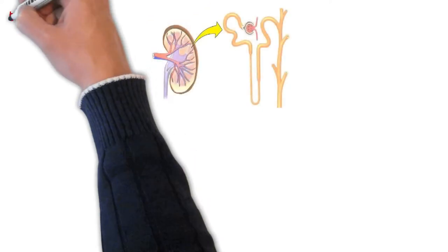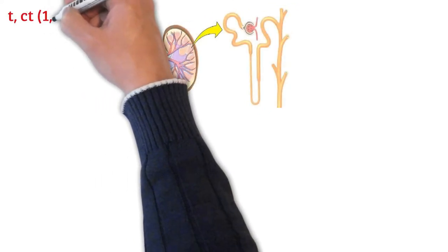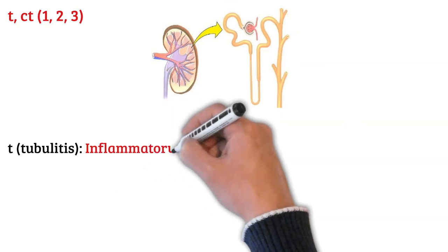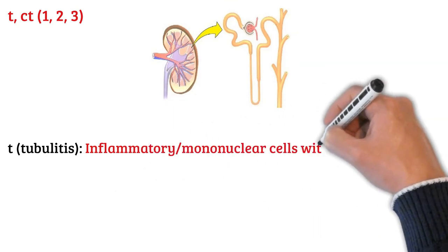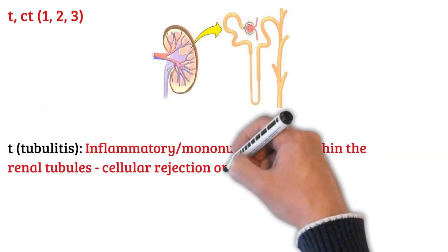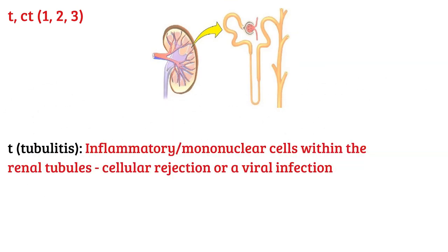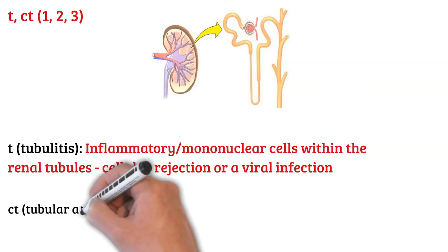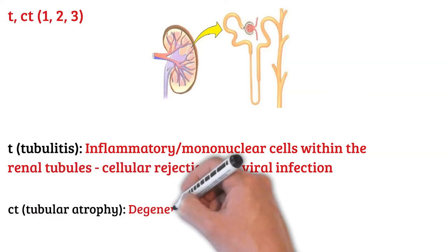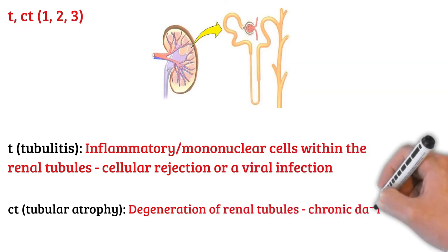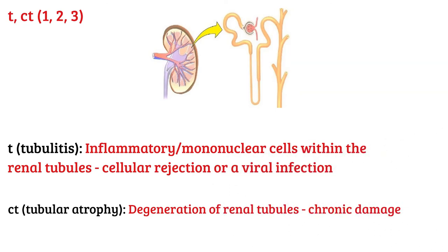Moving to the renal tubules, we have two codes: T and CT. T stands for tubulitis, which represents the presence of inflammatory cells within the renal tubules, and can be seen with cellular rejection or a viral infection. CT stands for tubular atrophy, which represents the degeneration of renal tubules, indicating chronic damage.